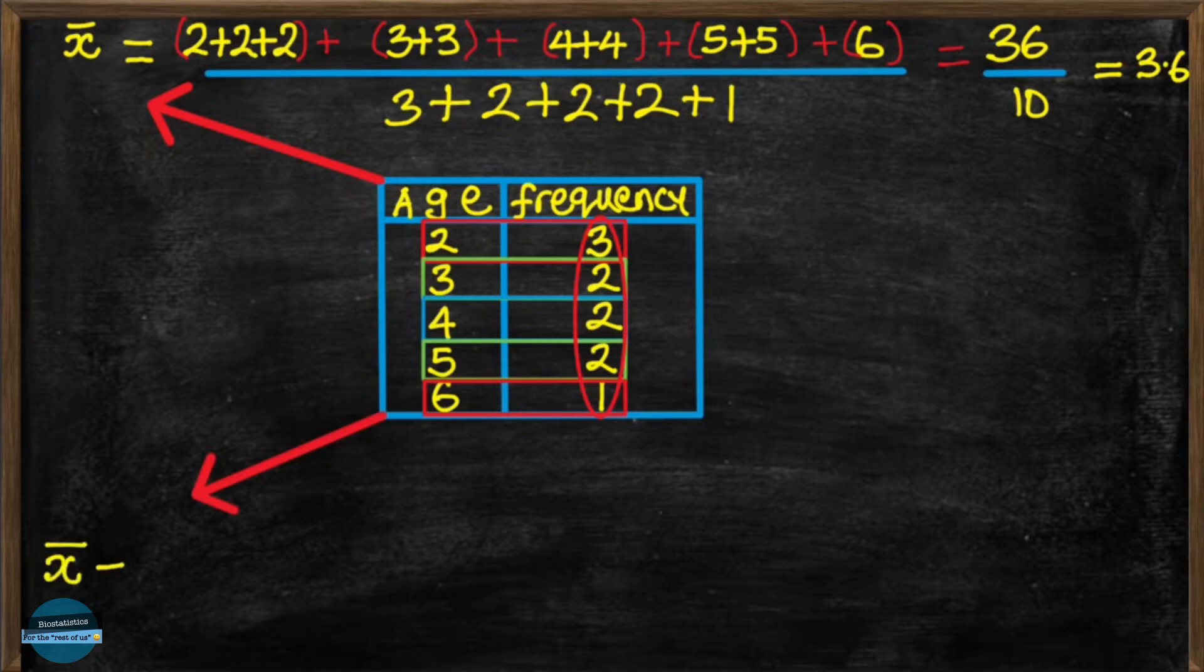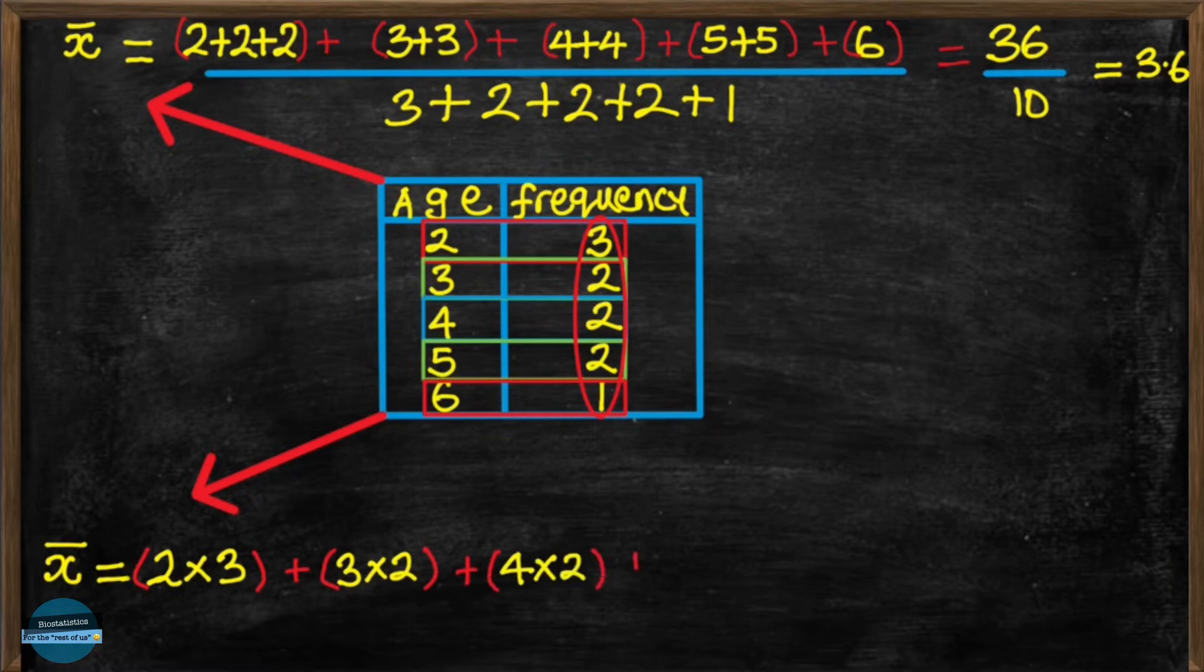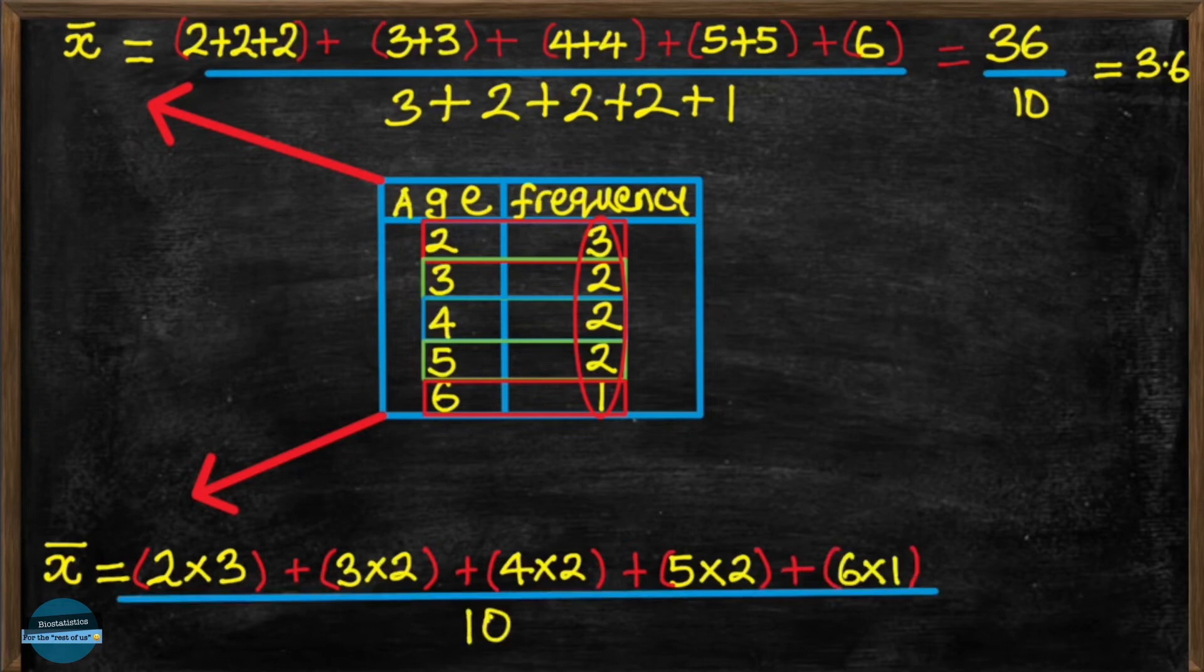So instead of saying 2 plus 2 plus 2, since it's 2 occurring 3 times, we can say 2 times 3. And then we continue and say plus 3 times 2, plus 4 times 2, plus 5 times 2, plus 6 times 1. All divided by 10. So we'll still get 36, and divided by 10 will give us the same answer.